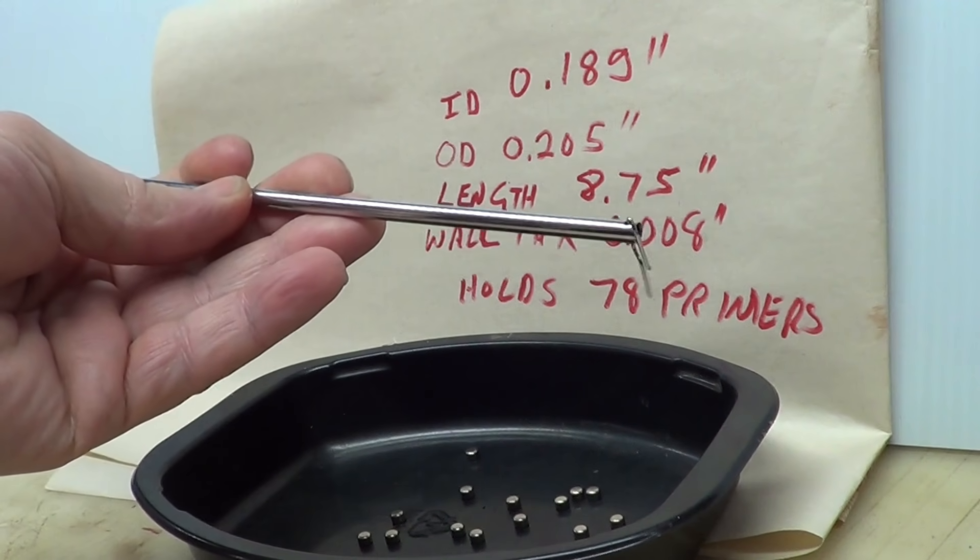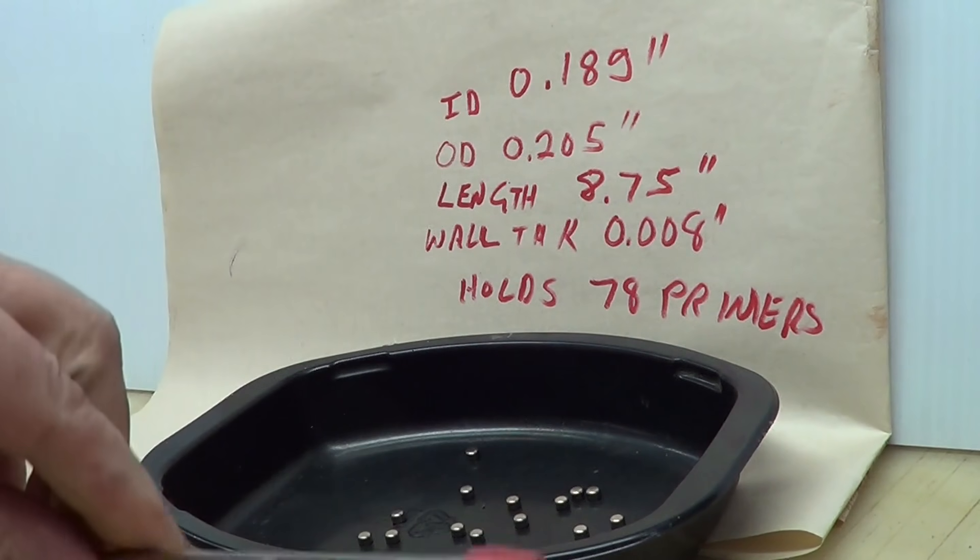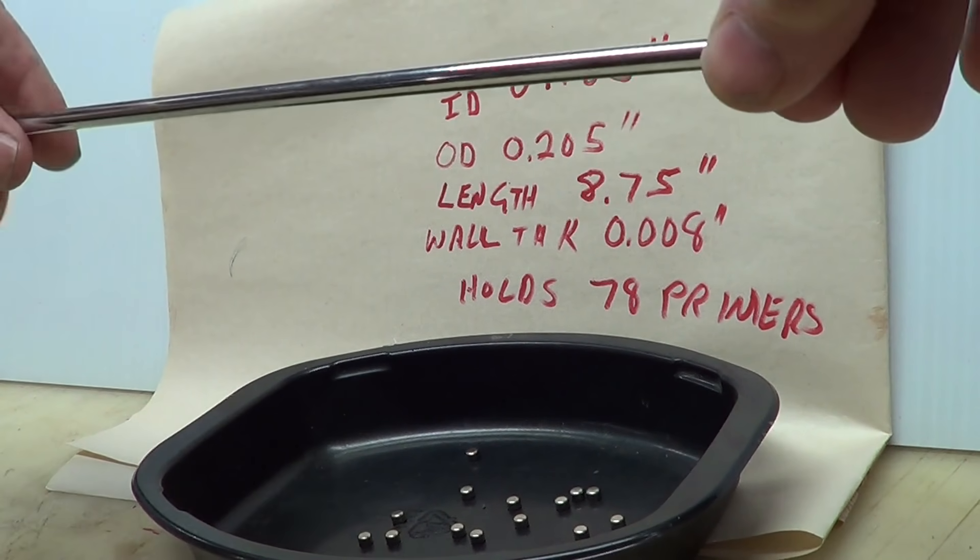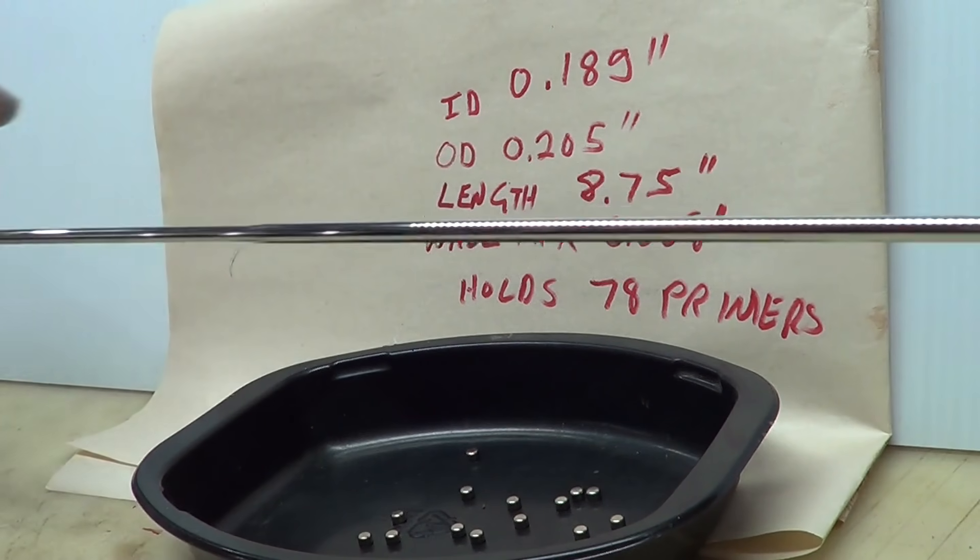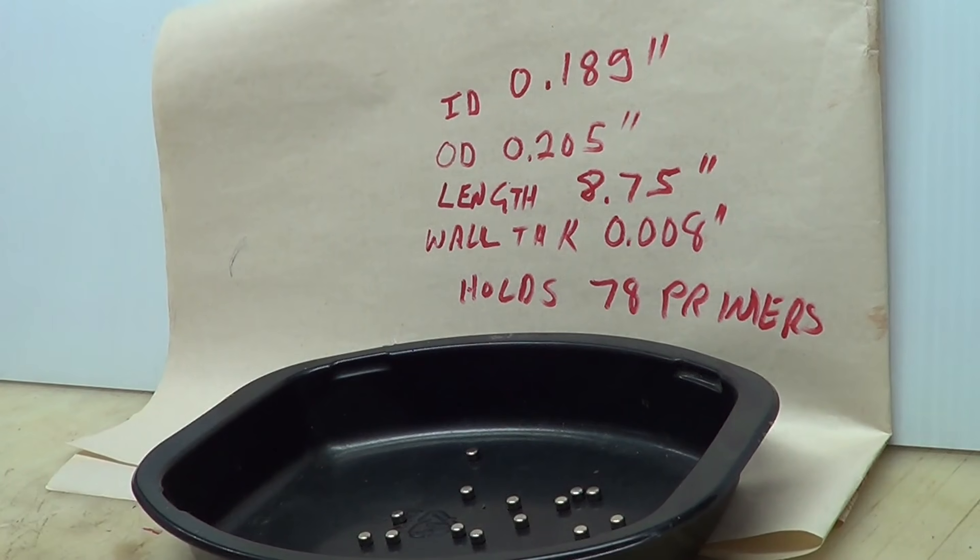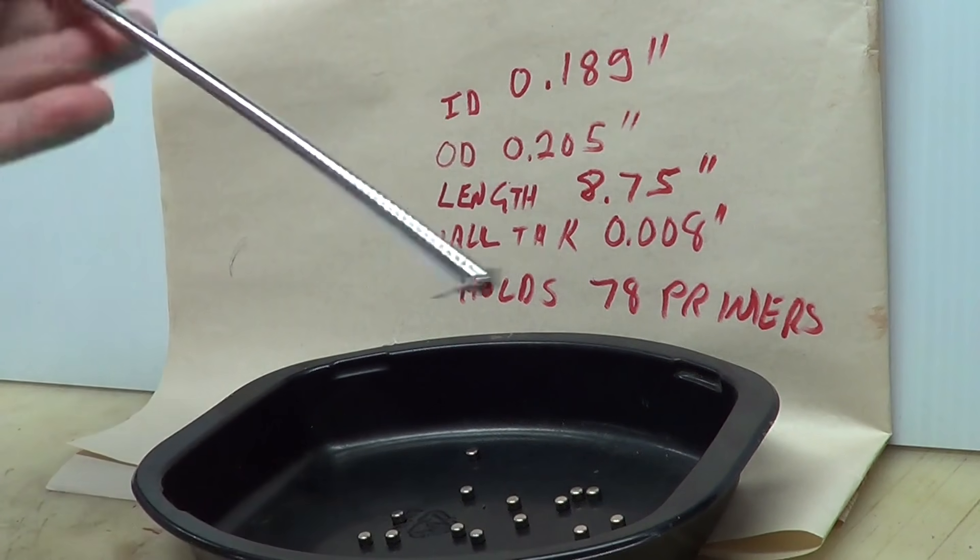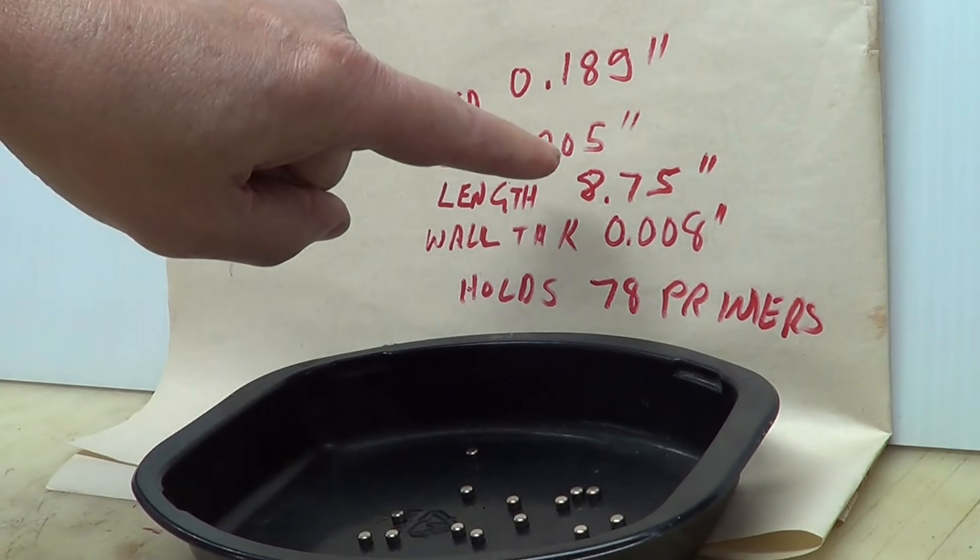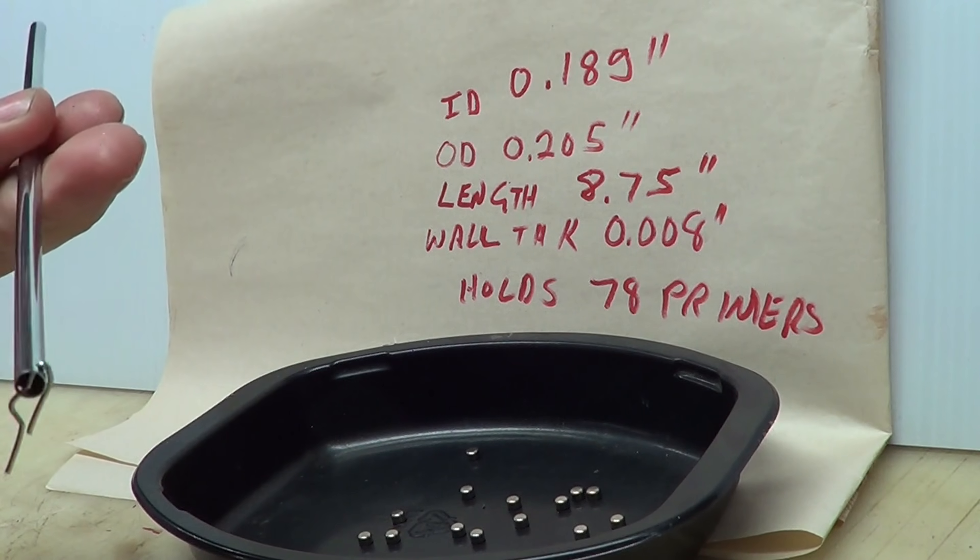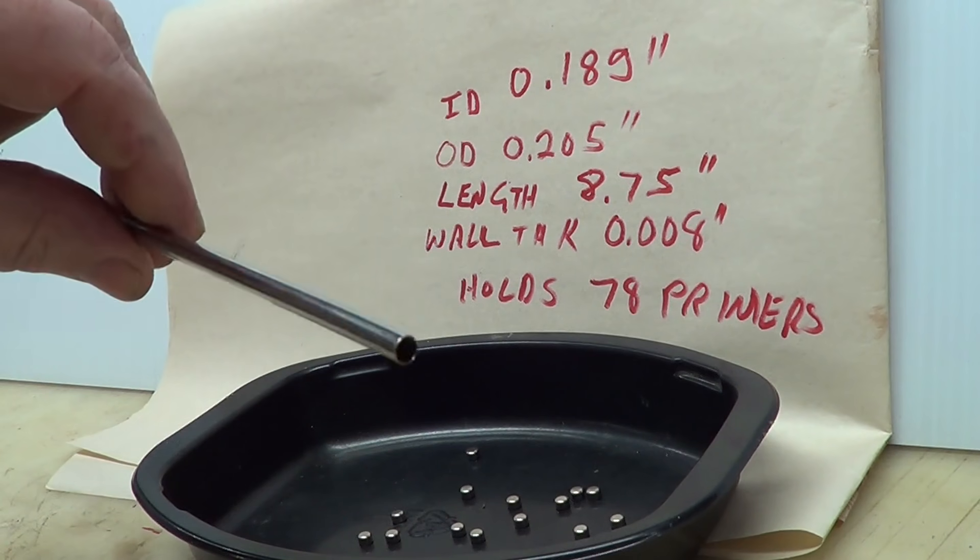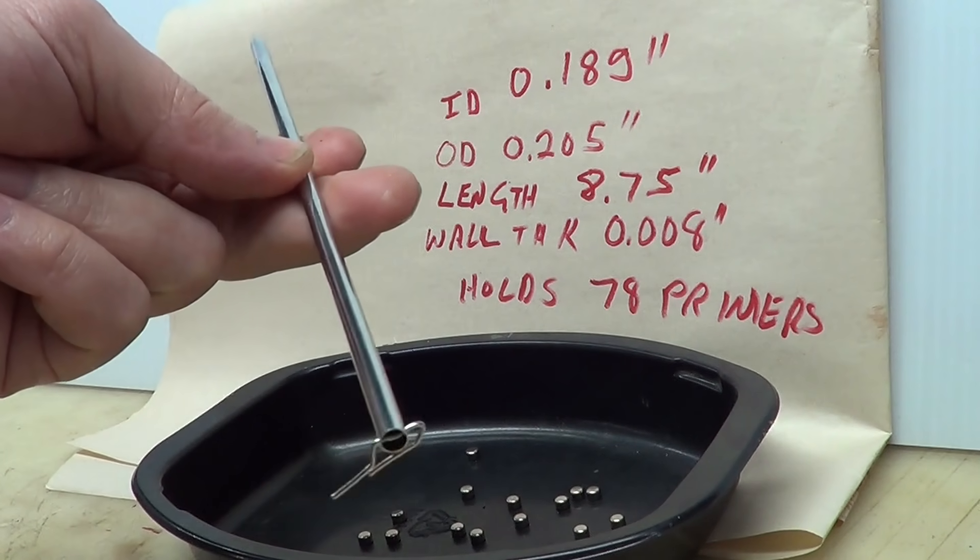For making the primer pickup tube, I got somewhat lucky on that. I was going through my junk drawer and came across an old telescoping antenna. And when I took it apart, it turned out that it was the exact perfect size for making a primer pickup, and I put the dimensions of the tube right here. If you can't find an old telescoping antenna, obviously you can just buy these tubes right off Amazon that are made by one of the other loading companies.